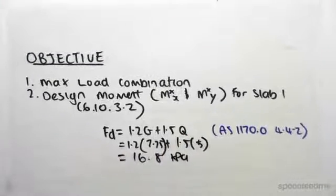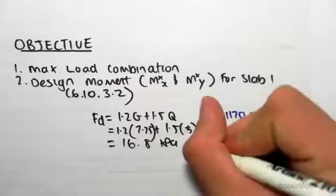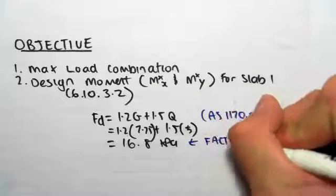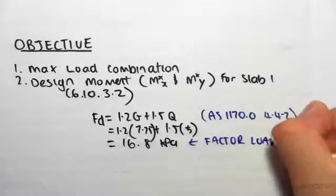And as you can see, the 1.2G and 1.5Q, they factor up. Okay, so they increase the load. It artificially increases the load.